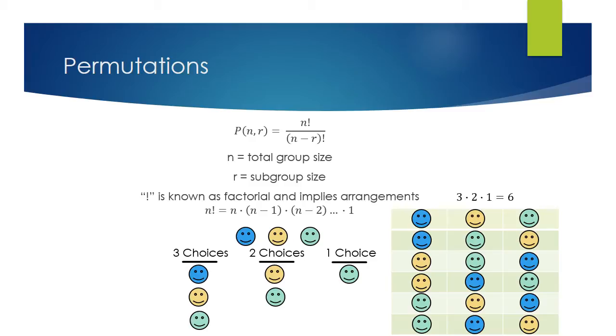How many ways can we arrange three? So that would be n would be three, and the subgroup would also be three. So if you put that into the formula above, it will come out to be six. And you might notice that you get zero factorial. Well, zero factorial is just one.